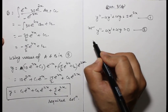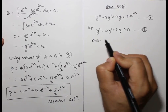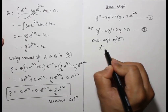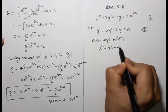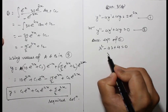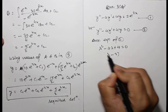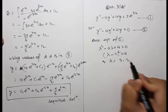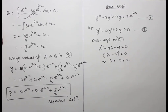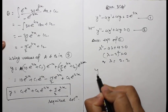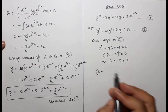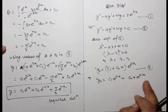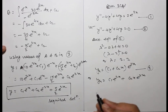The auxiliary equation is lambda² - 4lambda + 4 = 0, which factors as (lambda - 2)² = 0, giving lambda = 2, 2 (a repeated root). Thus the complementary function includes e^(2x) and x·e^(2x) as allied solutions.